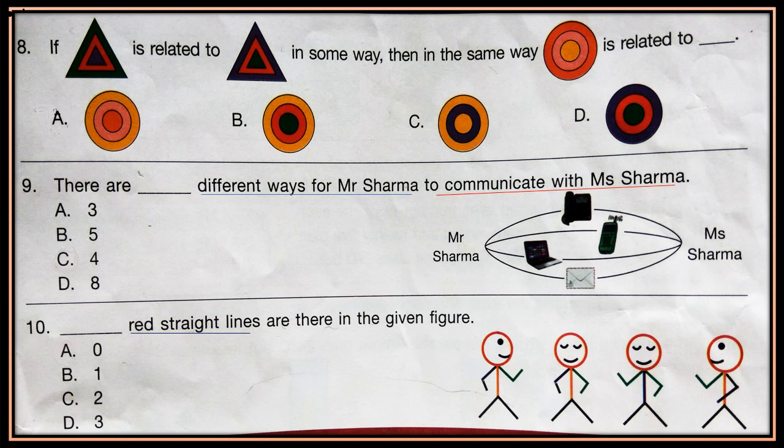Question 8. If triangle is related to the given triangle in some way, then in the same way circle is related to? Choose from options A, B, C, D. From which option is this circle related?